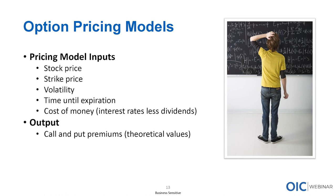The inputs used in pricing models are: stock price, strike price, volatility, time until expiration, and the cost of money — the prevailing interest rate minus any dividends. You can visualize it like a meat grinder: you throw all these inputs in, and what it spits out are theoretical values for call and put prices.